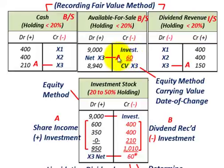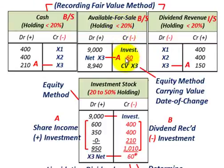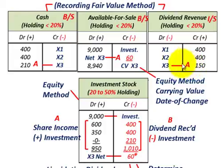When making the change from the equity method to the fair value method, you reclassify your securities as available-for-sale, adjust the carrying value for the liquidating dividend, and convert dividend revenues for the year of change. The conversion is triggered when Corporation A's ownership in Corporation B falls below 20%. The cumulative excess of dividends over income — the liquidating dividend — results in a reduction in the available-for-sale securities investment.